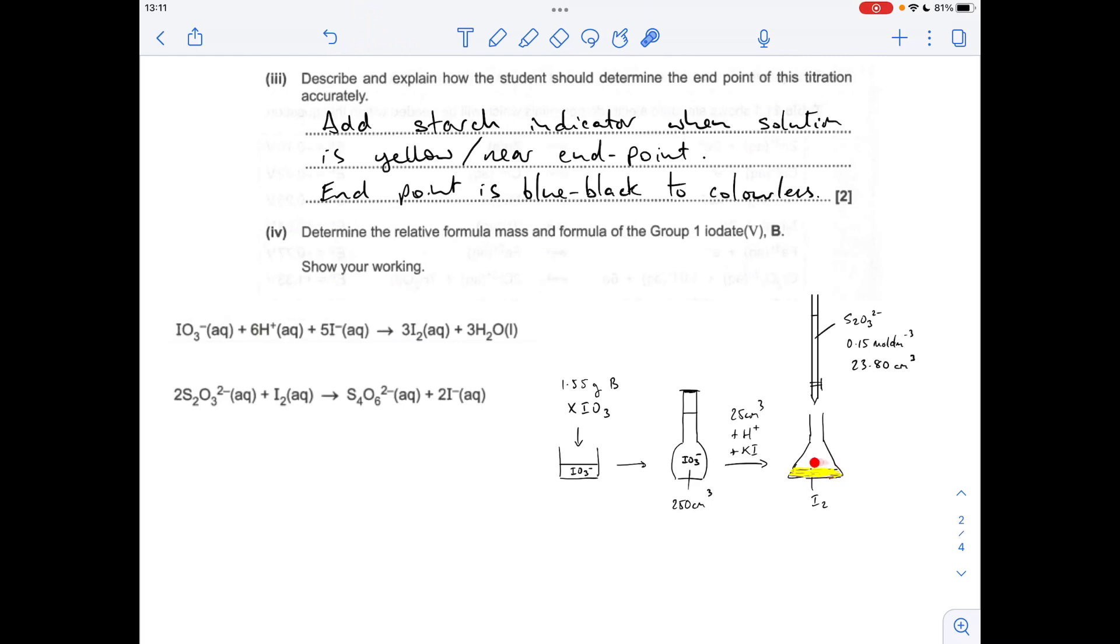Towards the end point, the color of the flask goes very pale yellow. At that point you add starch indicator, which makes it go blue-black. Then when the final drop of thiosulfate goes in and reacts with the last bit of iodine, the flask contents go colorless because all the iodine's gone.